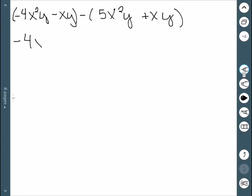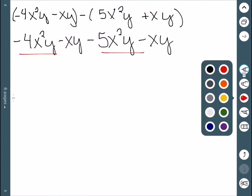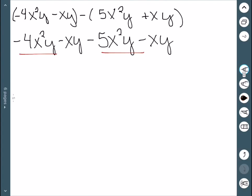When subtracting, we still start by distributing the negative sign. This gives me negative 5x squared y minus xy. Then we can combine like terms. I have a negative 4x squared y and a 5x squared y. That gives me negative 9x squared y. I also have a negative xy and a negative xy. This is negative 2xy.